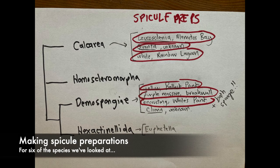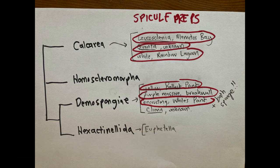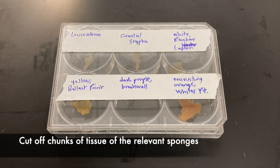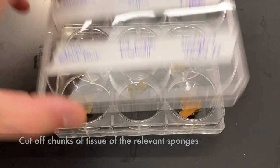You'll notice that we skipped looking at spicules for most species, but let's do it now for six of the species we've looked at. That process is pretty straightforward, and it's very important for figuring out the species of sponge that you're looking at.